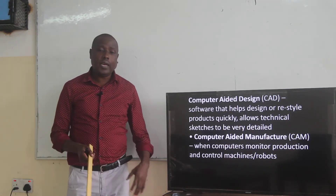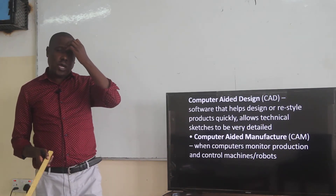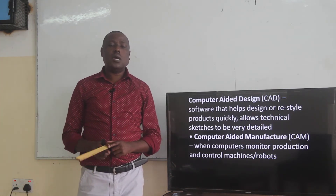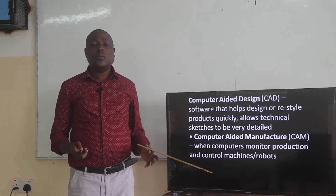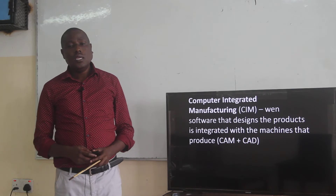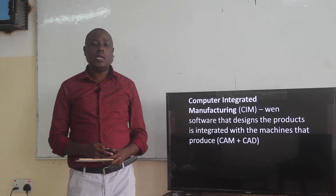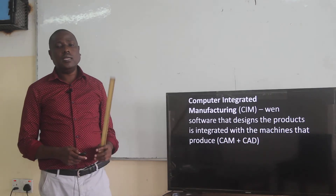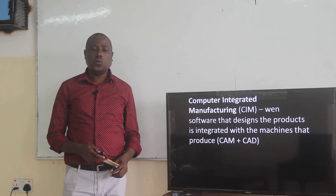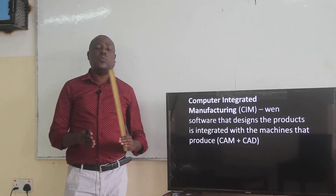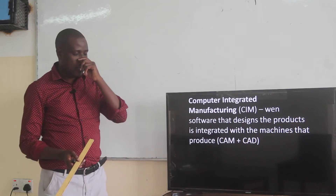Computer-aided manufacturing (CAM) refers to a station where computers monitor production and control machines producing products. Computer integrated manufacturing (CIM) is when the software that designs the products is integrated with the machines that produce them. So CIM is a combination of computer-aided manufacturing (CAM) and computer-aided design (CAD).